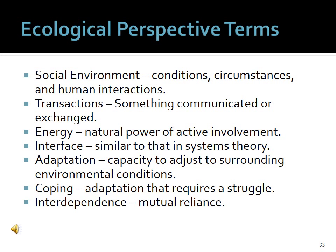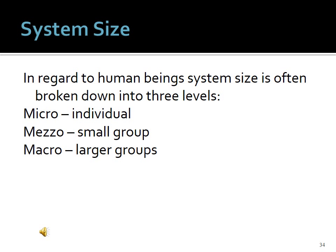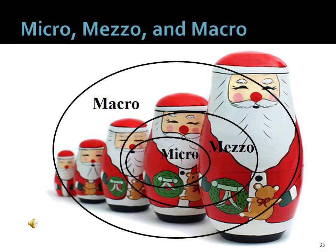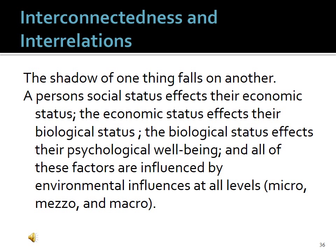In regard to human beings, system size is often broken down into three levels. Micro refers to the individual. Meso refers to small groups, which could also be families. Macro refers to larger groups. Systems can be seen as having the characteristics of Russian nesting dolls, where one small doll fits inside a bigger one, and those fit inside yet another bigger doll. A micro system can reside in a meso system, and a meso system can reside in a macro system. The shadow of one thing falls on another — a person's social status affects their economic status, which affects their biological status, which affects their physiological well-being — all influenced by environmental factors at micro, meso, and macro levels.